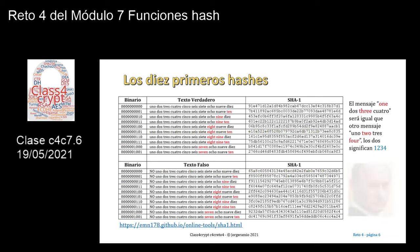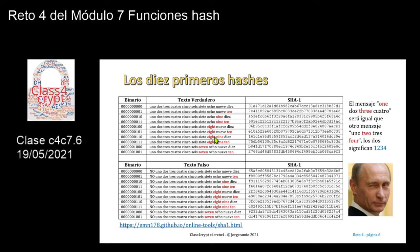Aquí tenemos los 10 primeros hashes. En binario, tenemos desde un conjunto de 10 ceros hasta el 1001, es decir, desde el 0 hasta el 9, tanto en la parte de arriba como en la parte de abajo. Todos los ceros serían las palabras del 1 al 10 en español. Cuando ya tenemos el 1, serían los 9 primeros números en español y el 10 en inglés, en color rojo para que se puedan distinguir. El texto verdadero es exactamente igual que el texto falso, solamente que el texto falso viene precedido por NO mayúscula, espacio.